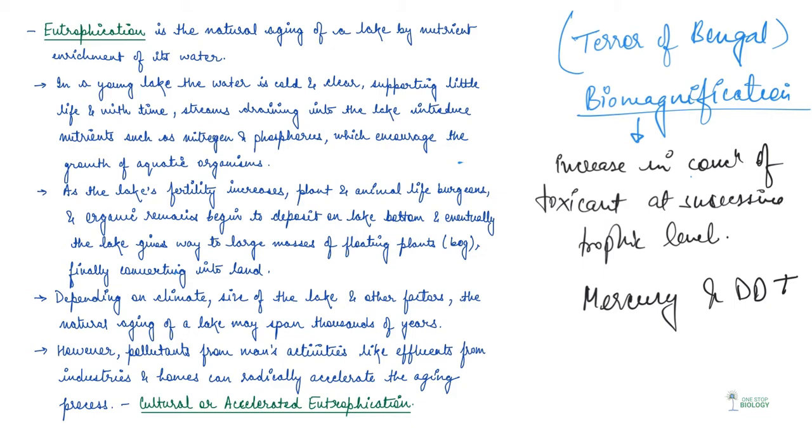But because of pollutants from man's activities, because of effluents from the industries or homes, the aging process of lakes are being accelerated. And this phenomenon is known as cultural or accelerated eutrophication. So, during the past century, guys, lakes in many parts have been severely eutrophied by sewage and agricultural and industrial wastes. And the prime contaminants are nitrates and phosphates.